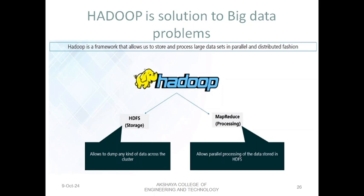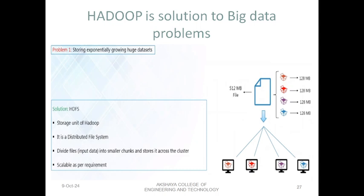Hadoop is a solution for big data. Hadoop is a framework that allows us to store and process large data sets in a parallel and distributed fashion. HDFS — the Hadoop Distributed File System — is the mechanism used to store the data, and MapReduce is the processing mechanism that processes the data in parallel.